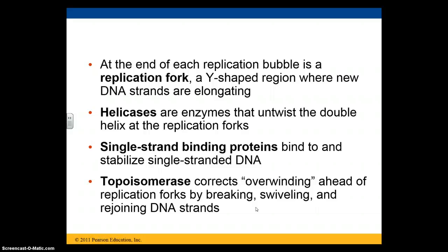Helicases are the enzymes that untwist the double helix at the replication fork — the helicase is the enzyme that takes the helix apart. Single-stranded binding proteins are special proteins that stabilize the single-stranded DNA and keep it from twisting and winding back together. There is also something called topoisomerase, which corrects the overwinding ahead of the replication fork by breaking, swiveling, and rejoining DNA strands.